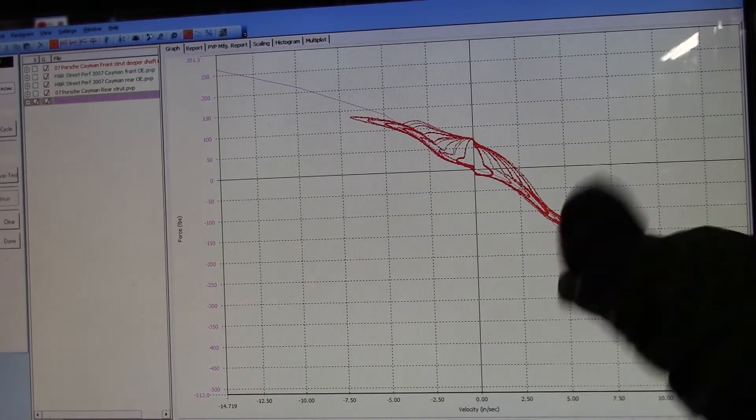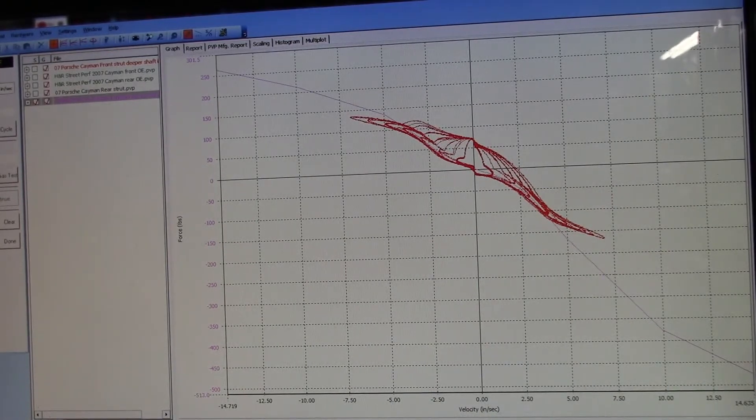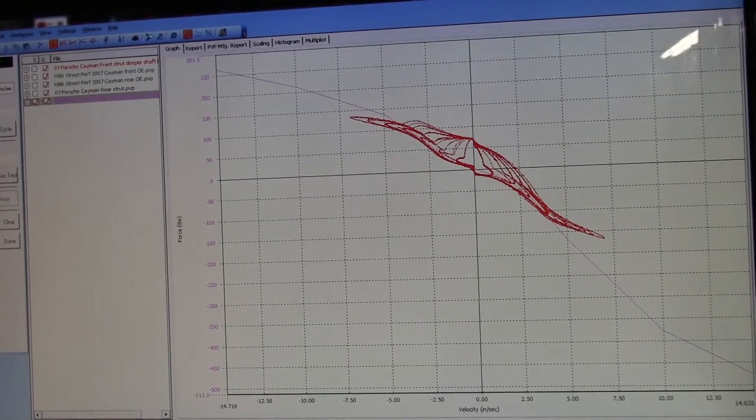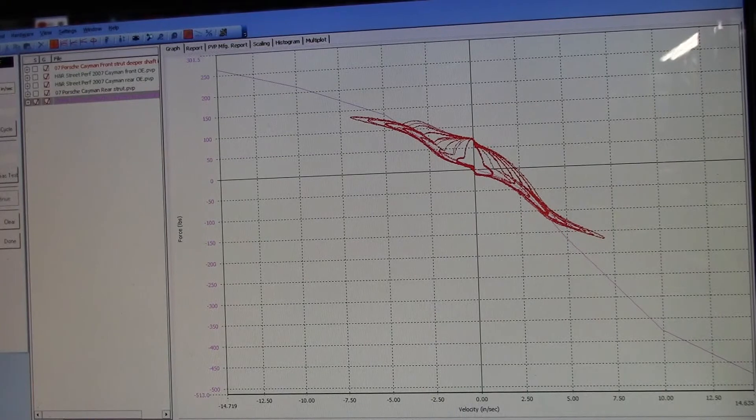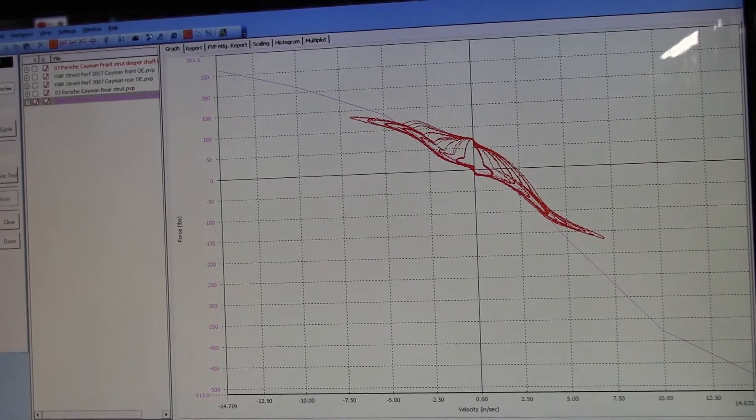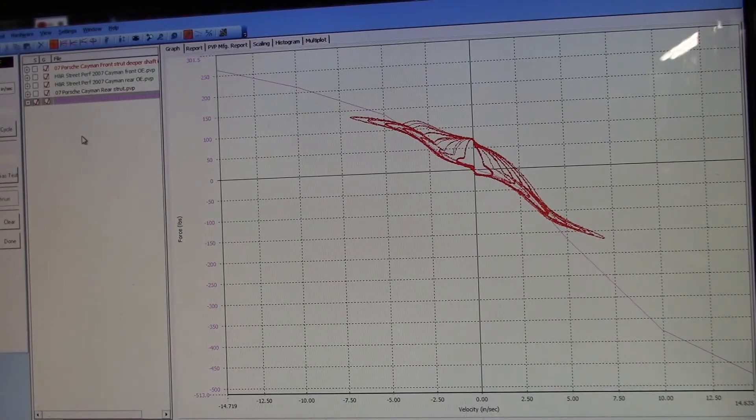So these coilovers were designed to be run with, I think it was 80 kg, 80 newton per millimeter front, and a 70 rear. Unless, actually, no, I think I have that backwards. But essentially, it's clearly designed to really run on the bump stops. And I'm not sure how low he has this set, but there's not a ton of travel. And he actually went to a softer spring before he ended up switching to ours.